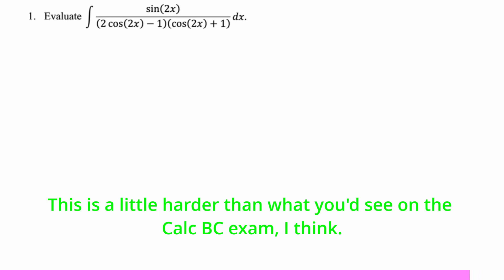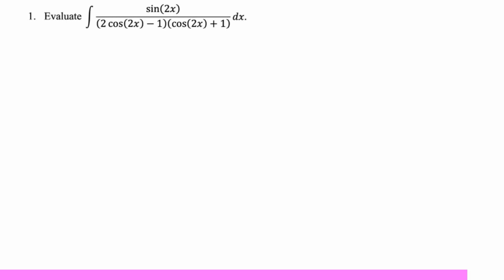I'm going to say that u should be cosine of 2x, because the derivative of that is related to sine of 2x and it'll make the whole thing look a little simpler. So then du would be negative 2 sine of 2x dx, so negative 1/2 du equals sine of 2x dx.